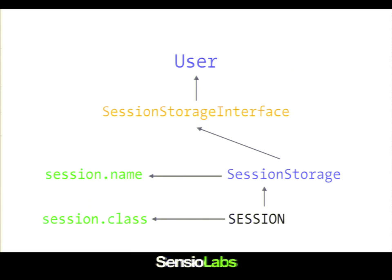Talking about our user and session storage — in this design we have two objects (user and session storage), one interface, and two arguments (session name and session class). A container is able to say: if you want the user class, I know it depends on the session storage interface implementation. I have one — session storage — and I know this session storage class is going to be used because of the session name argument. The container knows everything about your classes, how they interact, and how to create those objects for you.